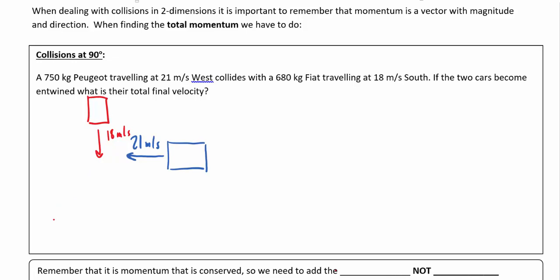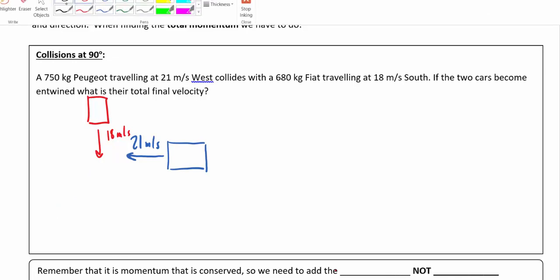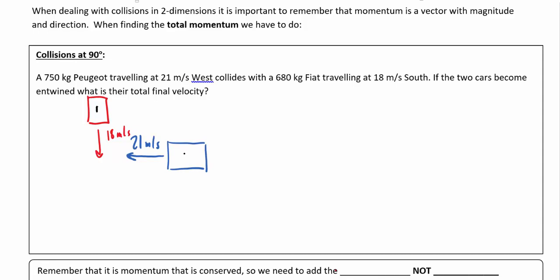The way we're going to find that is through a simple vector addition. I'll think of this as object one and object two. M1 is 680 kilograms and V1 is 18 meters per second, so momentum one would just be M1 times V1, which is 12,240 kilogram meters per second.